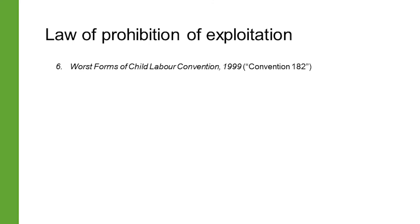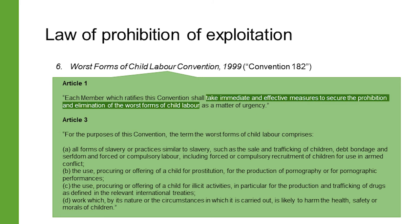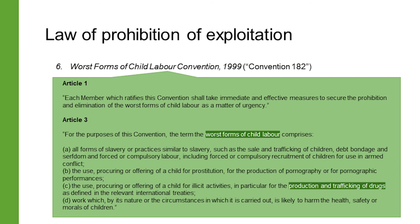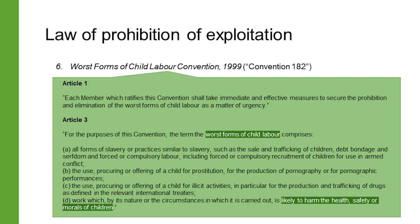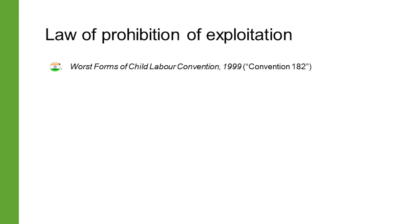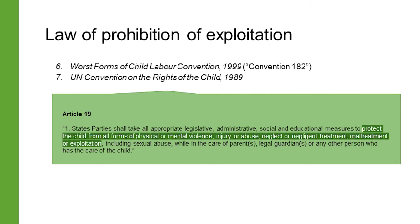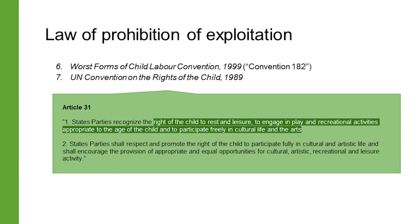The Worst Forms of Child Labour Convention of 1999 is another fundamental convention and requires ratifying states to eliminate the worst forms of child labour for people below the age of 18. These include all forms of slavery or practices similar to slavery, including forced or compulsory recruitment of children for use in armed conflicts, child prostitution and pornography, the use of children for drug trafficking, and other work likely to harm the health, safety, or morals of children. India has ratified this fundamental convention as well. In addition, the United Nations Convention on the Rights of the Child provides children with several general rights applicable in the context of work, including the state's duty to protect them from physical or mental violence, injury or abuse, neglect, maltreatment or exploitation, and the rights of children to rest, leisure, play, and recreational activities appropriate to the age of the child.